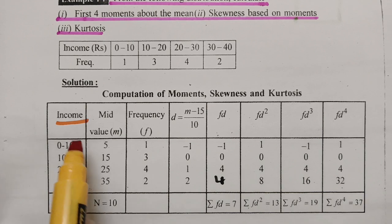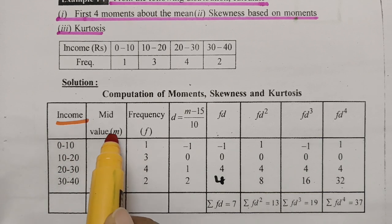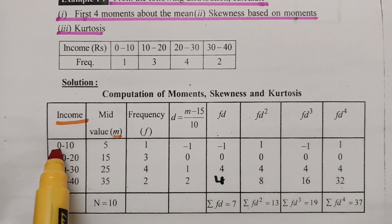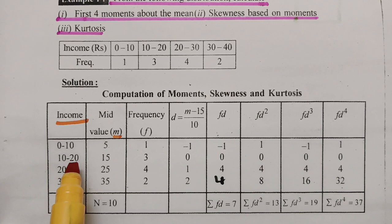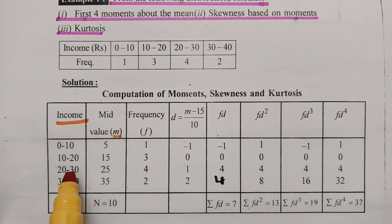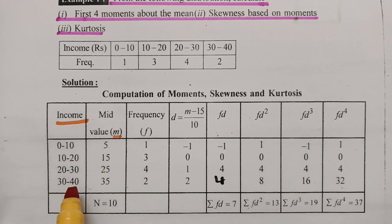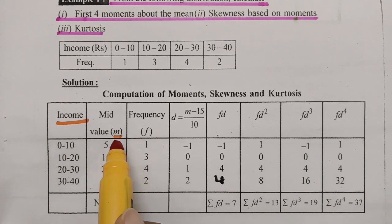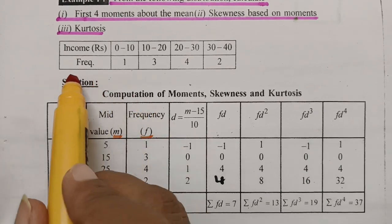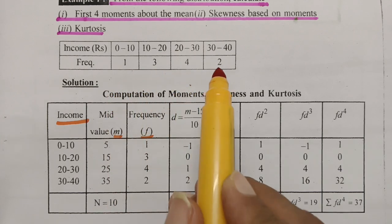In order to find the moments we use a computation table. Whenever class intervals are given, the mid-values m are calculated: (0+10)/2 = 5, (10+20)/2 = 15, (20+30)/2 = 25, and (30+40)/2 = 35. So we have m values of 5, 15, 25, 35 and frequencies 1, 3, 4, 2.